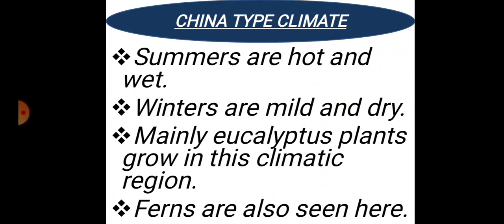The China-type climate region features hot and wet summers, with mild and dry winters. Mainly eucalyptus plants are grown here, and the fern plant also grows in this same climatic region.